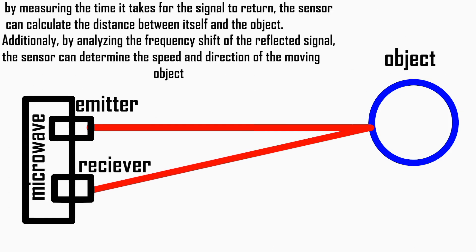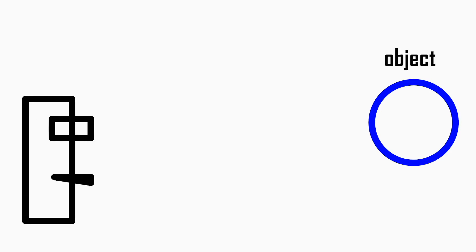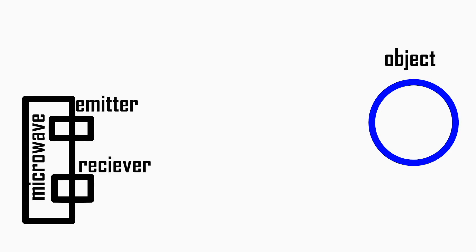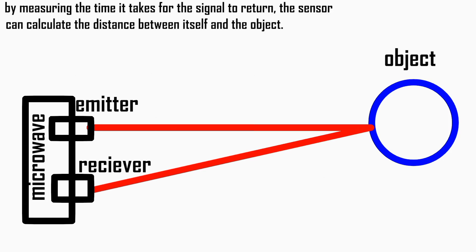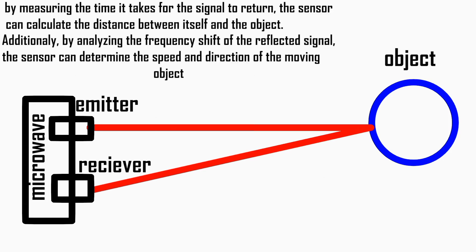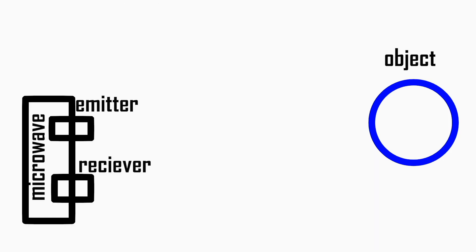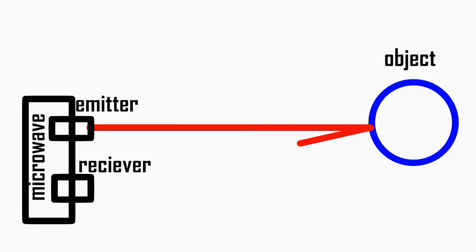When the microwave signal is emitted by the sensor, it travels through the air until it encounters an object. The signal interacts with the object and reflects back towards the sensor. By measuring the time it takes for the signal to return, the sensor can calculate the distance between itself and the object.